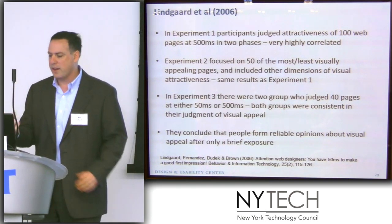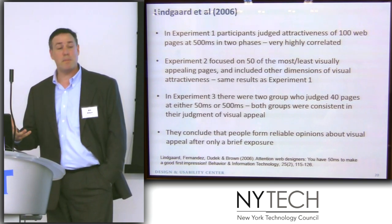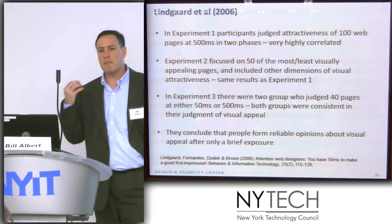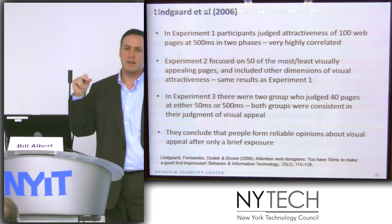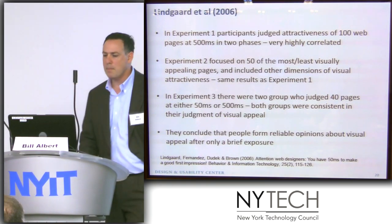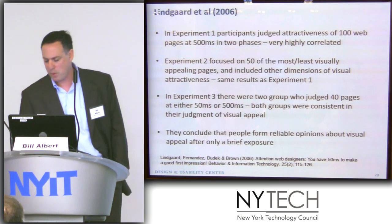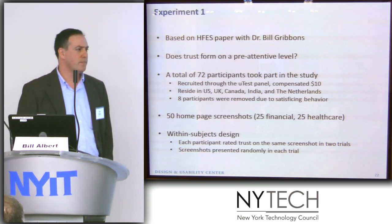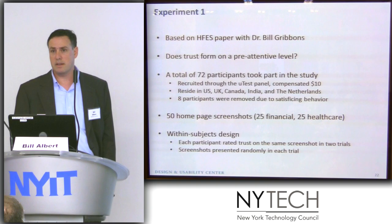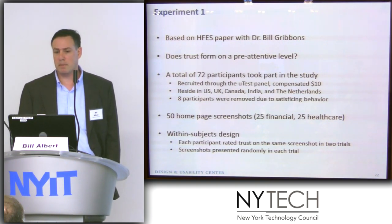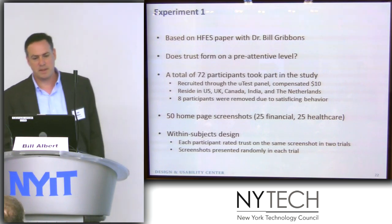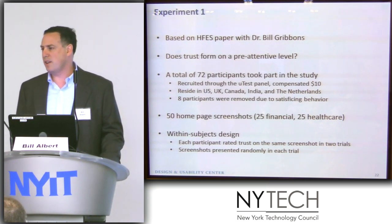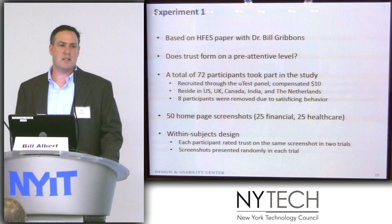What they concluded is that people can form reliable, consistent opinions about visual appeal after a very, very brief exposure. Something happens very quickly where you can tell good or bad. This is really the foundation of how we built out our research. So what did we do? This is based on a paper that Bill Gribbins and I wrote and published with HFES, the Human Factors and Ergonomics Society. Our question was: does trust form on a pre-attentive level? Can people form an opinion about trust pre-attentively? We saw that Lindgaard showed visual appeal can form pre-attentively — but what about trust?